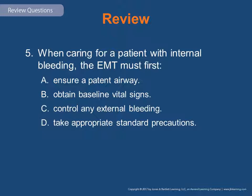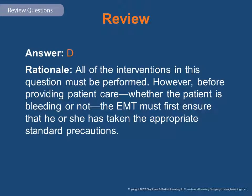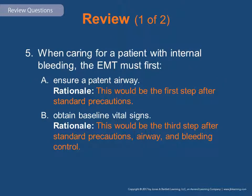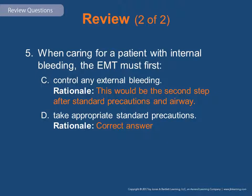Review question 5: When caring for a patient with internal bleeding, the EMT must first ensure a patent airway, obtain baseline vital signs, control any external bleeding, or take appropriate standard precautions. The answer is D — all of these interventions must be performed. However, for providing any patient care, the EMT must first take appropriate standard precautions. After standard precautions: first ensure a patent airway, then control any external bleeding, then obtain baseline vital signs.